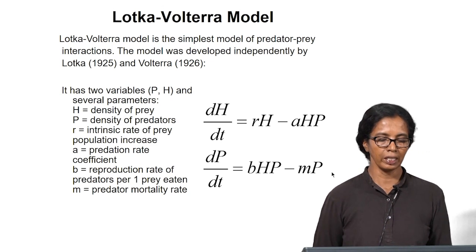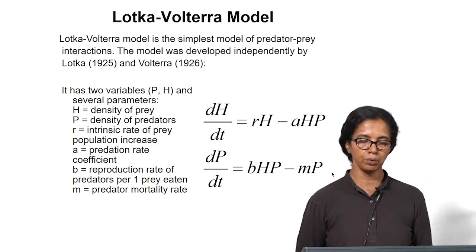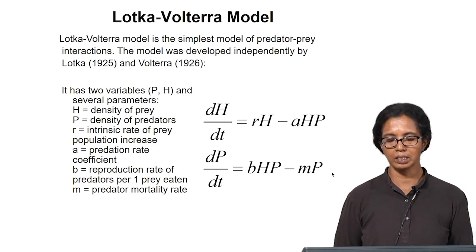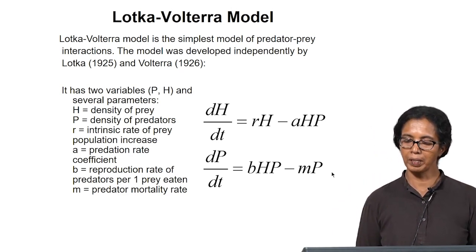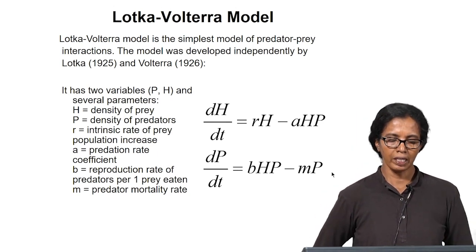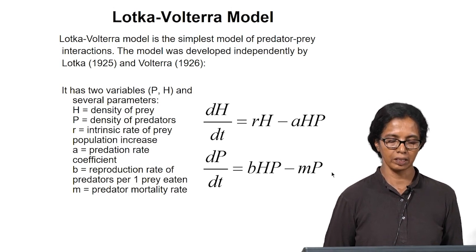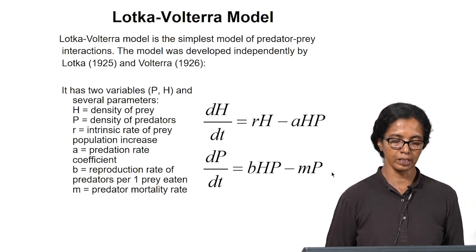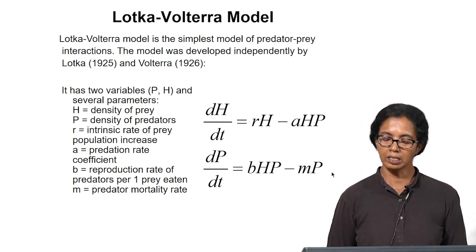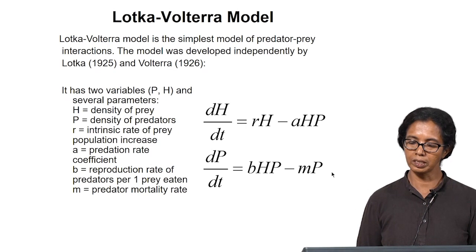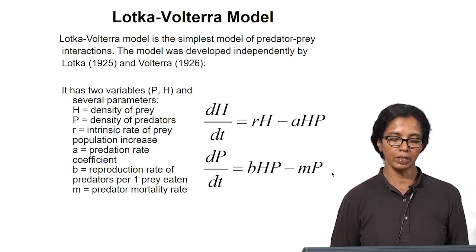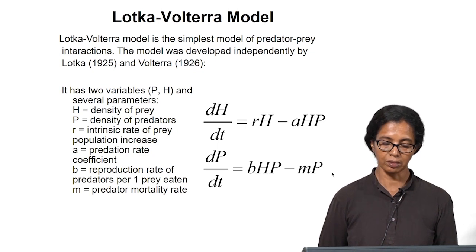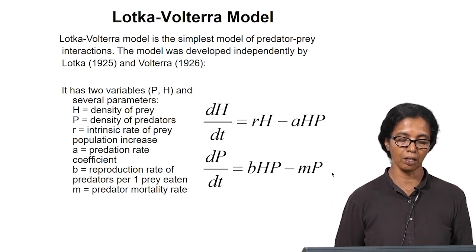The model has two variables, p and h, and several parameters. It is defined by two independent equations. The first equation is the variation of the density of the prey: dh/dt = rH − aHp, where h is the density of prey, r is the intrinsic rate of prey population increase — that is, how much the prey population can grow given resources in the absence of any predator. p is the density of predators. To determine r, we consider predator population as zero. a is the predation rate coefficient, which determines how the prey population changes in the presence of predators.